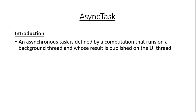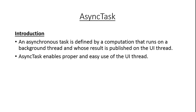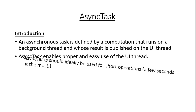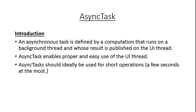Here is an introduction to AsyncTask. An asynchronous task, or simply AsyncTask, is defined by a computation that runs on a background thread and whose result is published on the UI thread. For example, in the case of downloading a file, you can display the downloading process using a progress bar. AsyncTask enables proper and easy use of the UI thread. AsyncTask should ideally be used for short operations — for example, a few seconds at most.